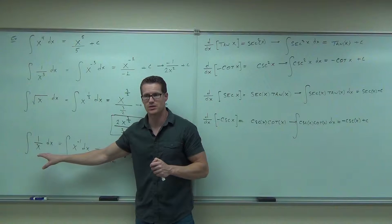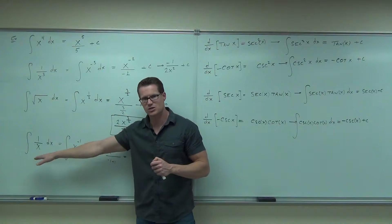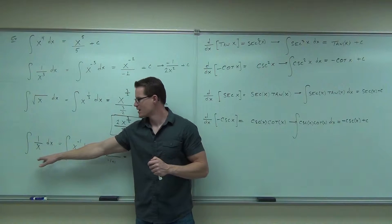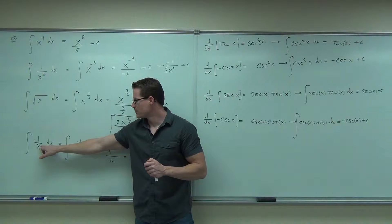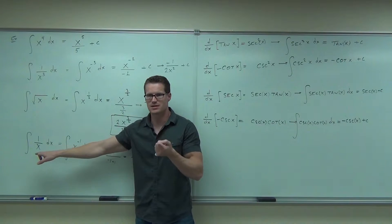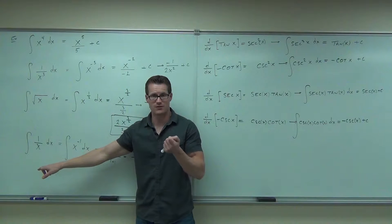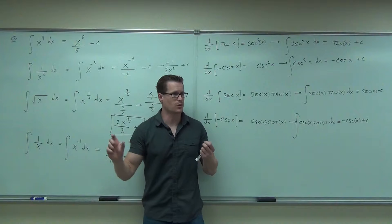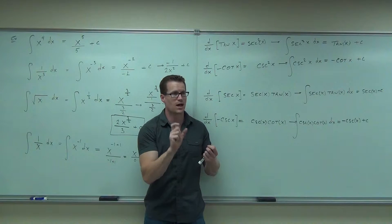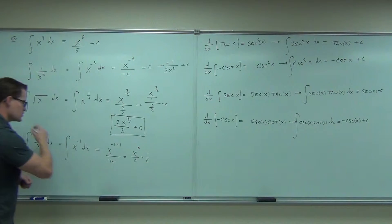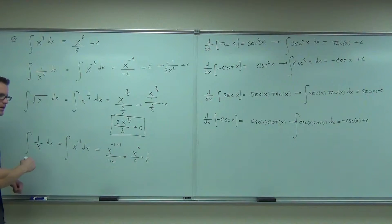You're not going to be able to do it here. The power rule only works if your exponent is not negative 1. If it is negative 1, you divide by a new exponent that is 0, and you can't do that. So this one's off the table for us. We can't do that one.